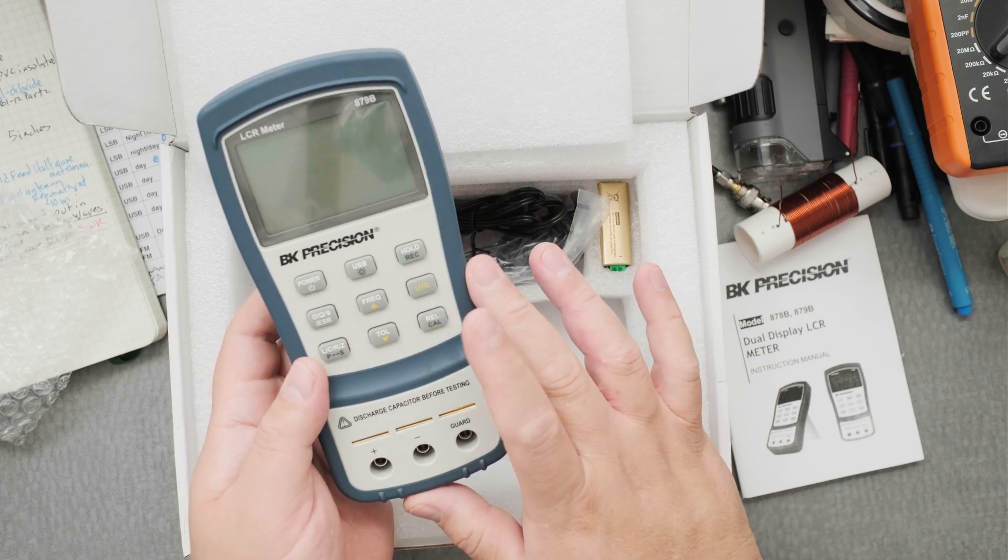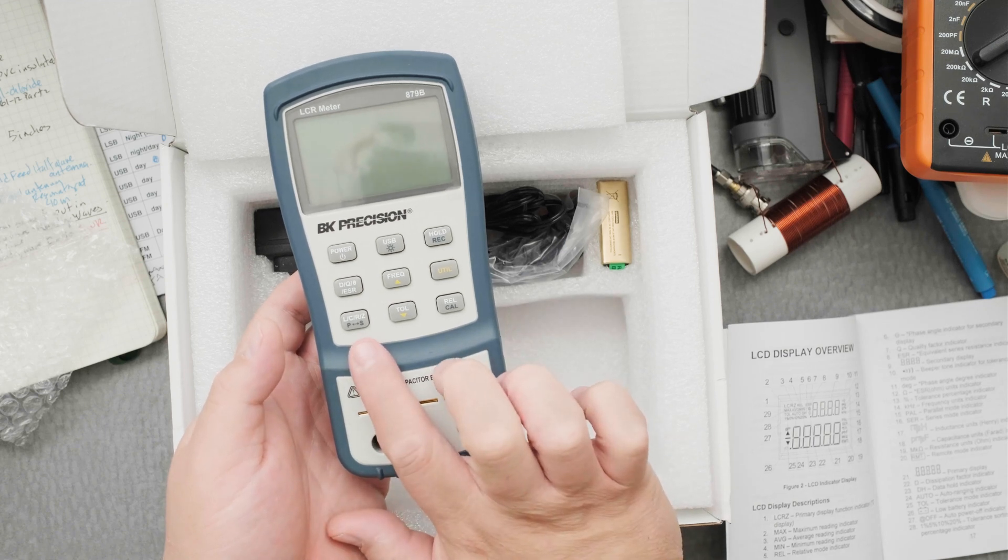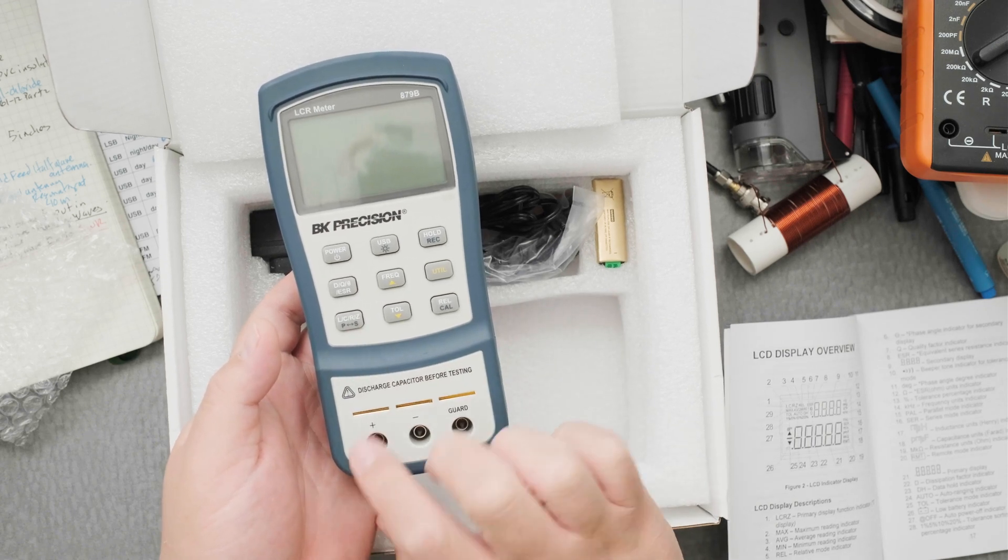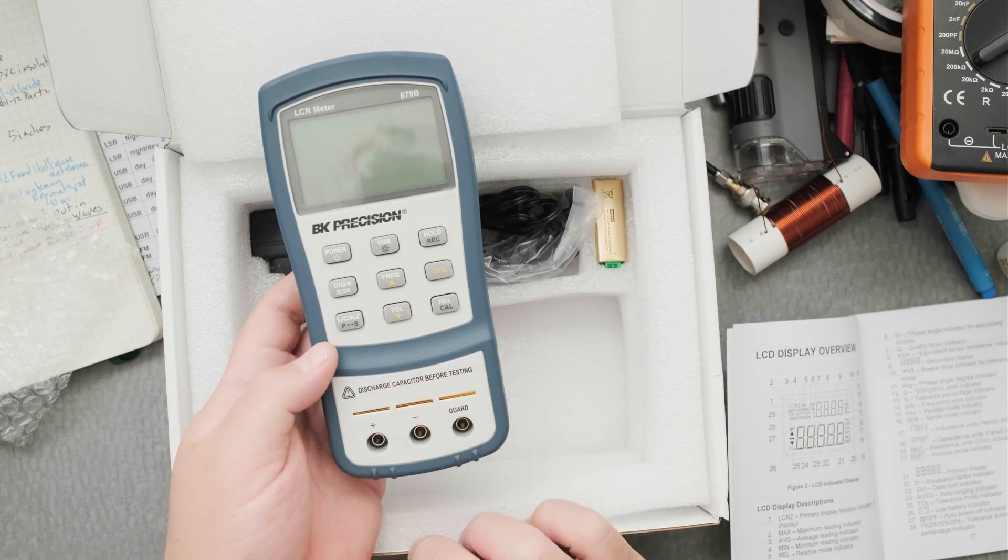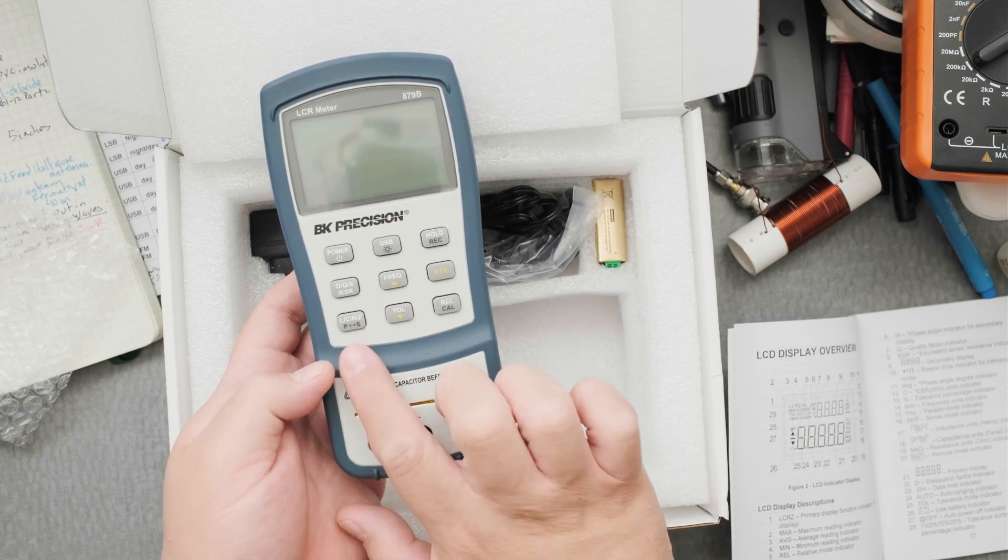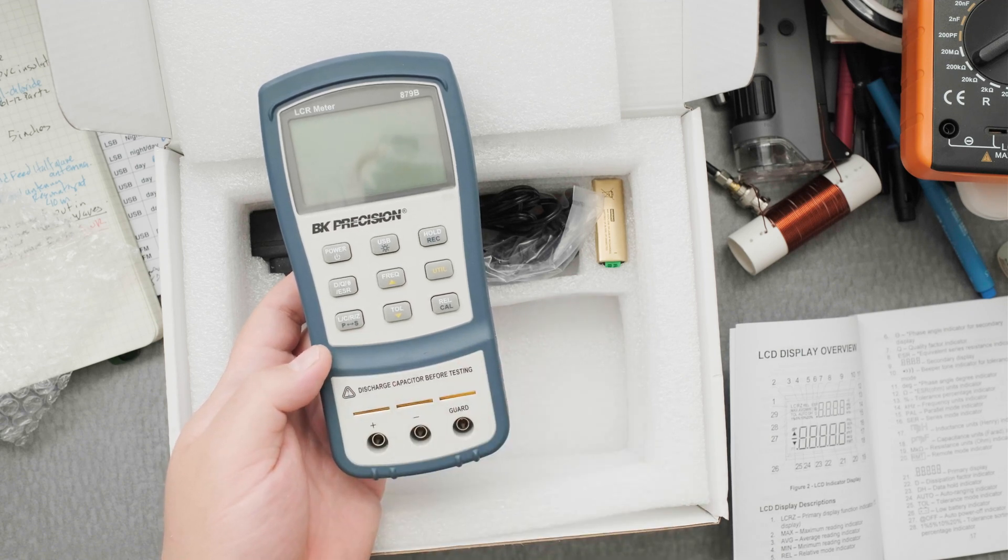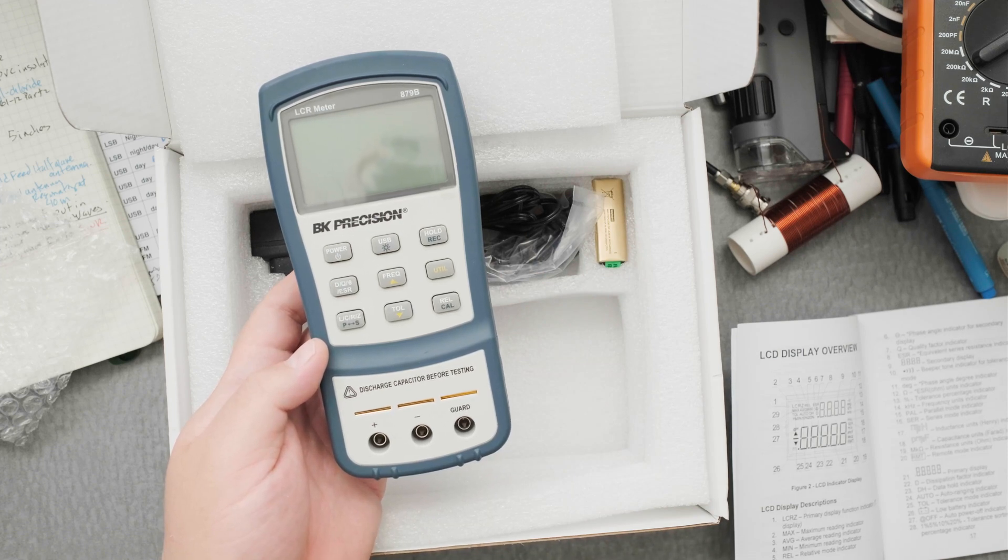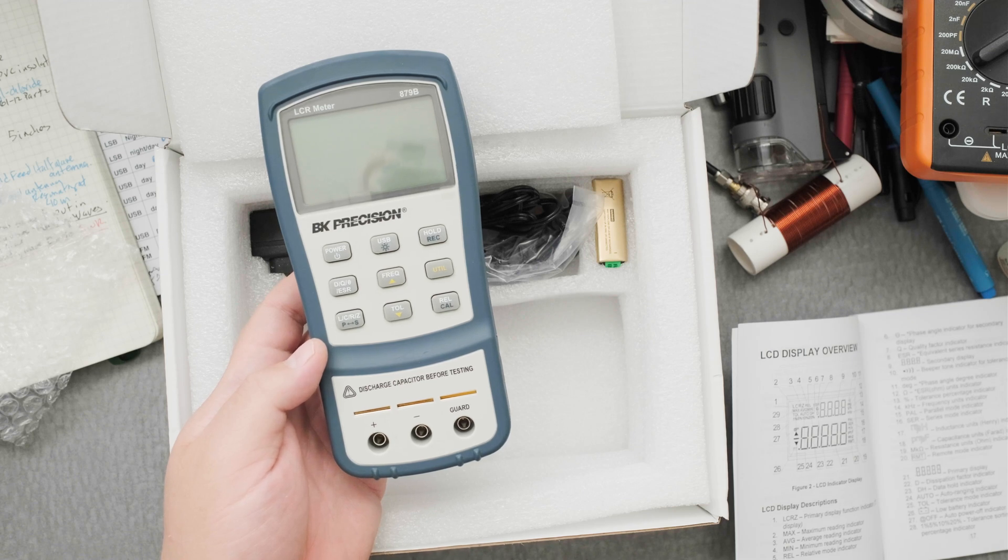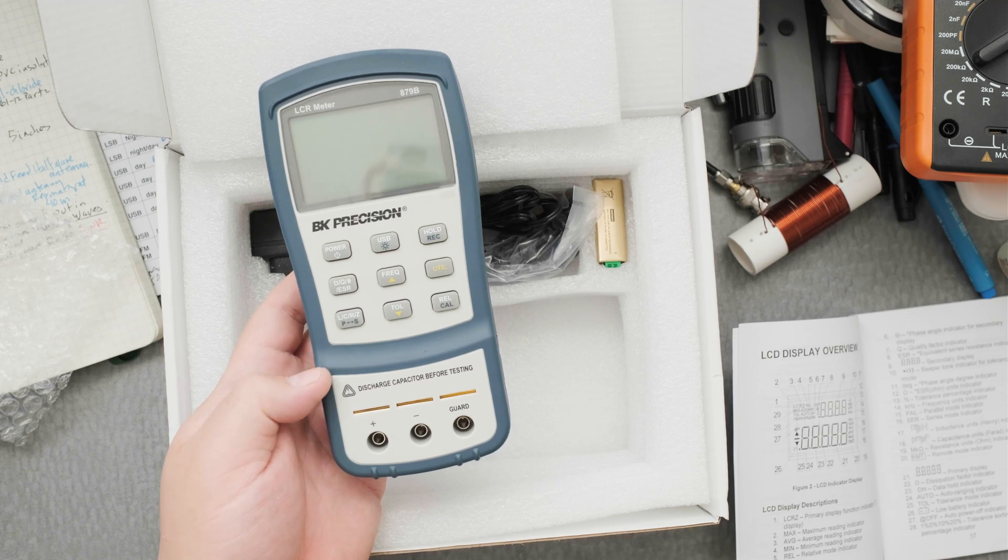It has a nice little layout. It's probably going to be an automatic reading. There's a few things that the meter does: it does inductance, capacitance, resistance, and impedance, and it does parallel and series mode.